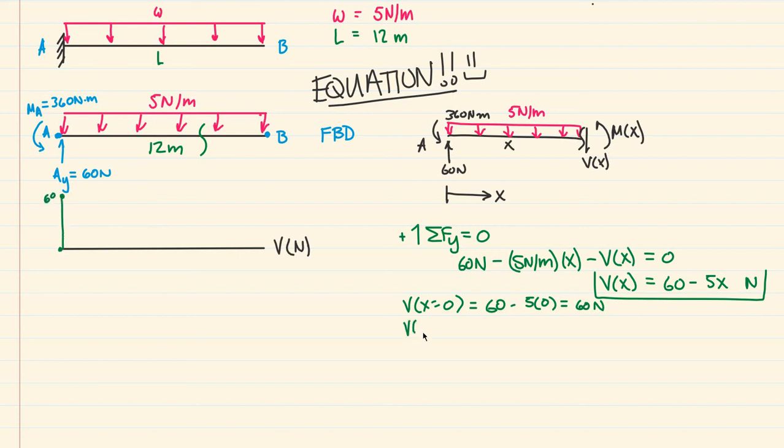If I did V(1), so 1 meter over to the right of A, somewhere over here, I would get 60 - 5(1), which equals 55 newtons. So the shear at this point is 55 newtons.